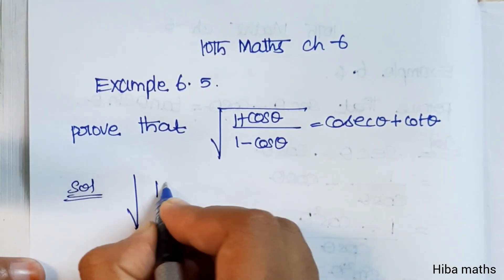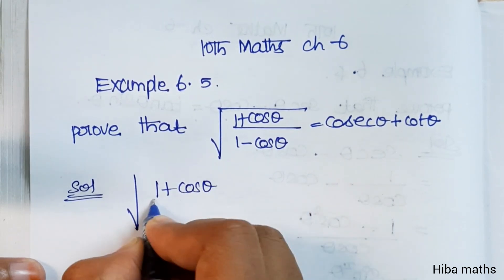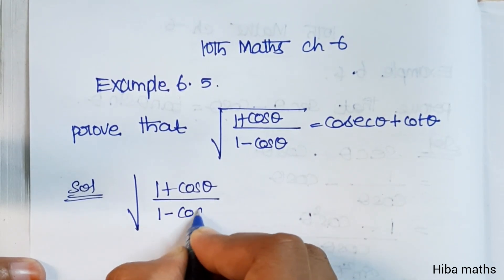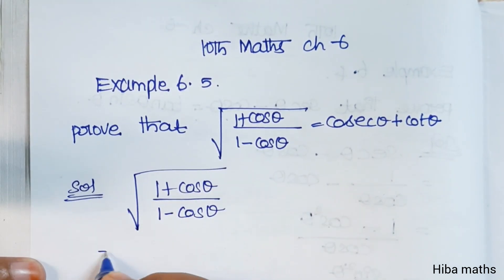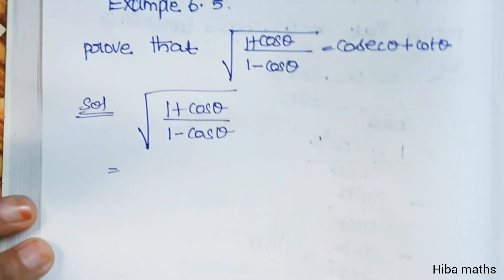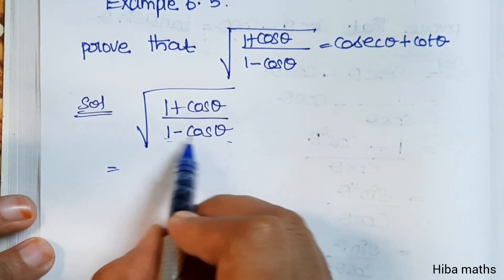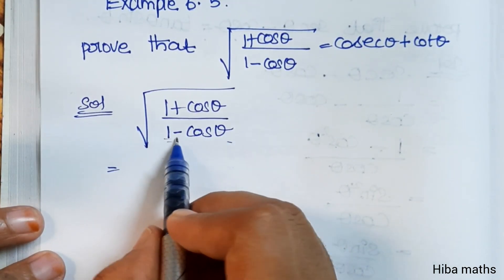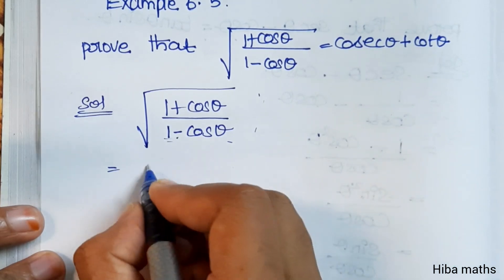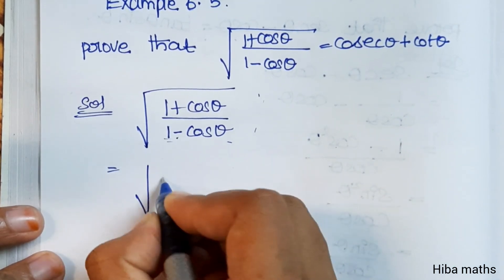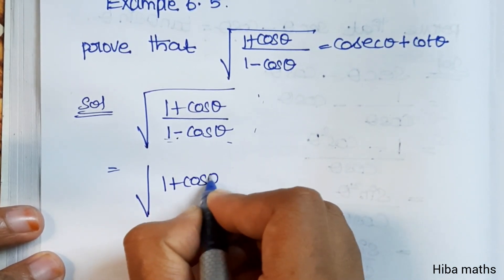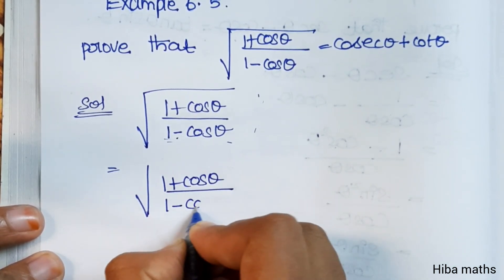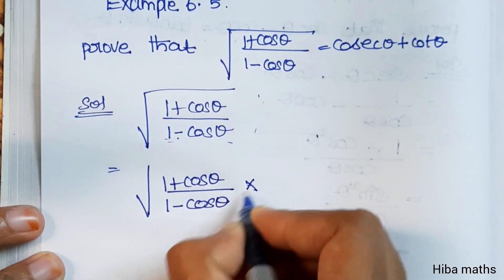We start with the LHS: square root of (1 plus cos theta) divided by (1 minus cos theta). To rationalize, we multiply both numerator and denominator by (1 plus cos theta).